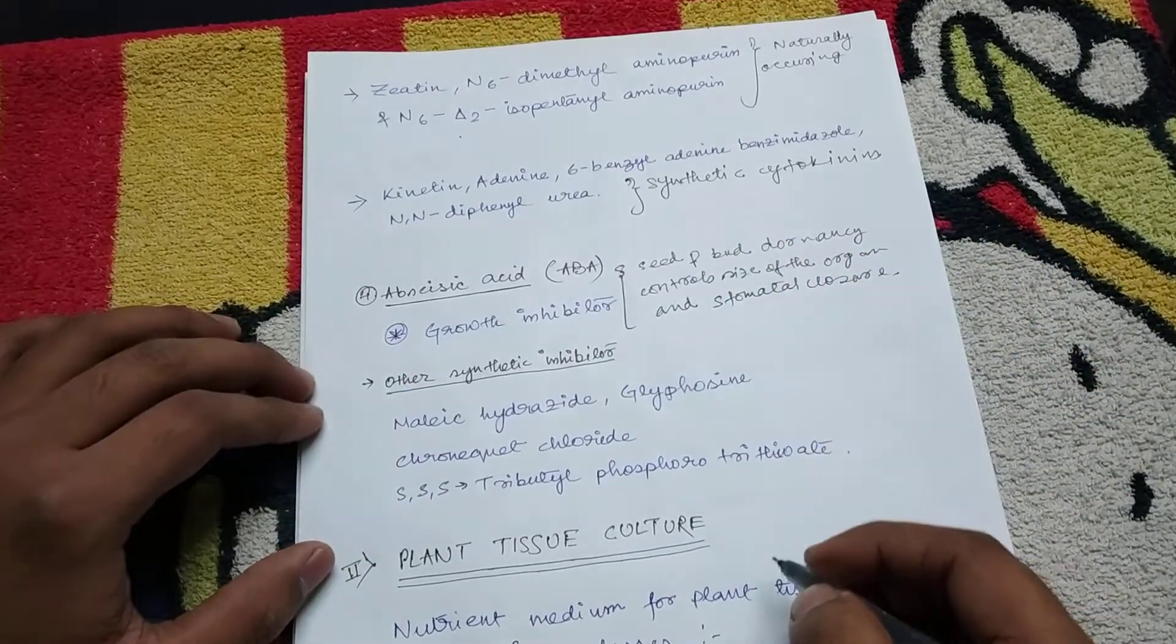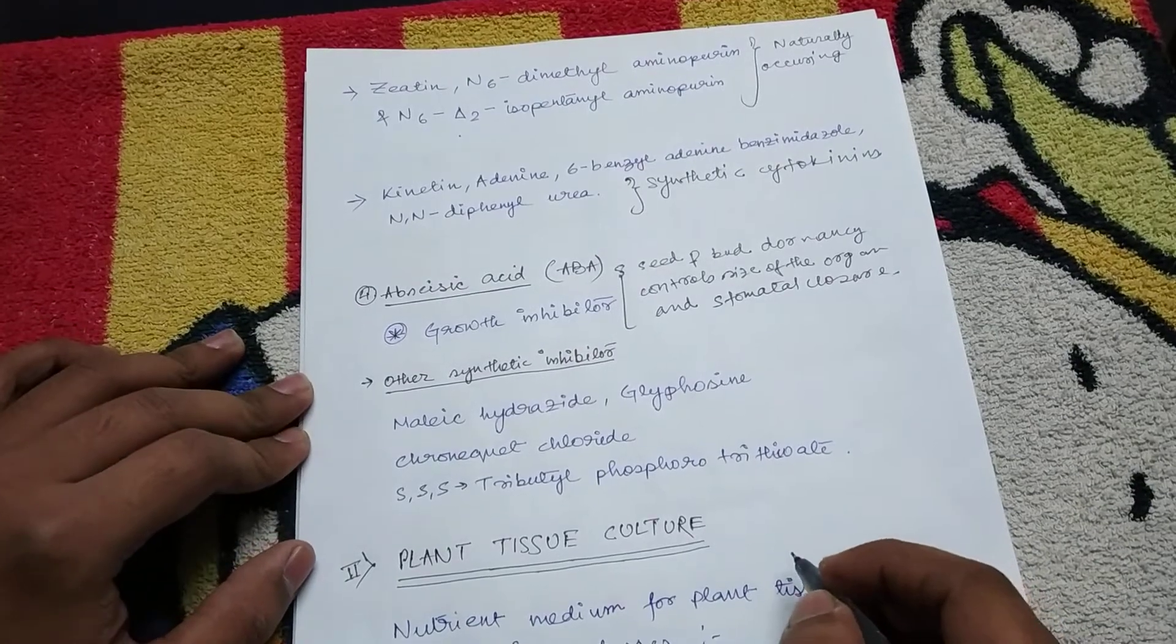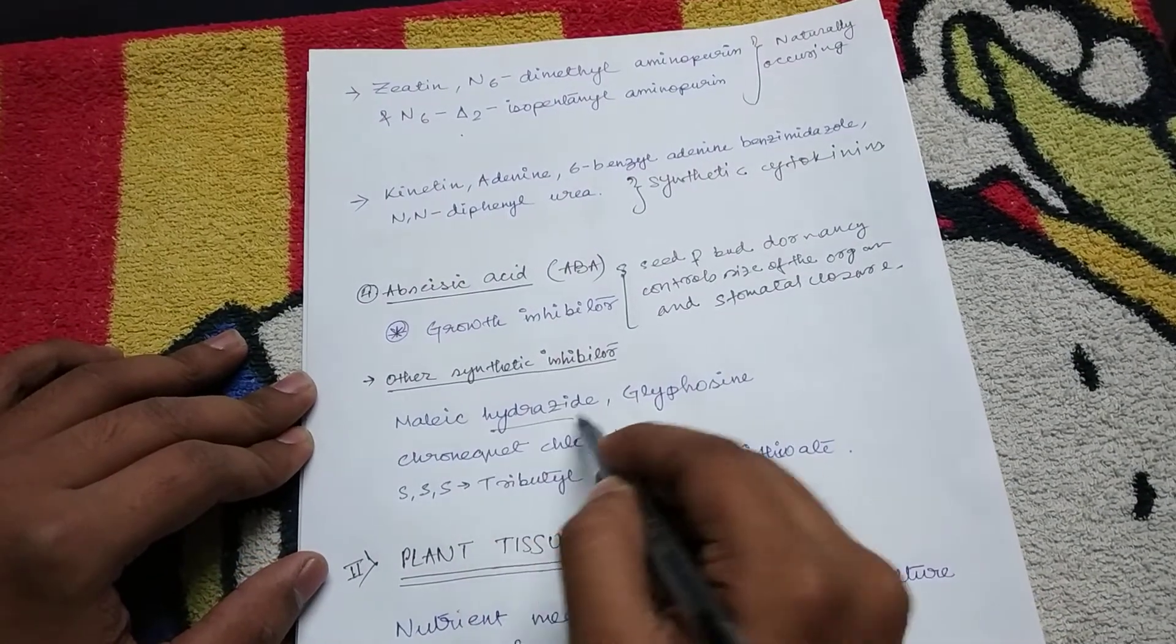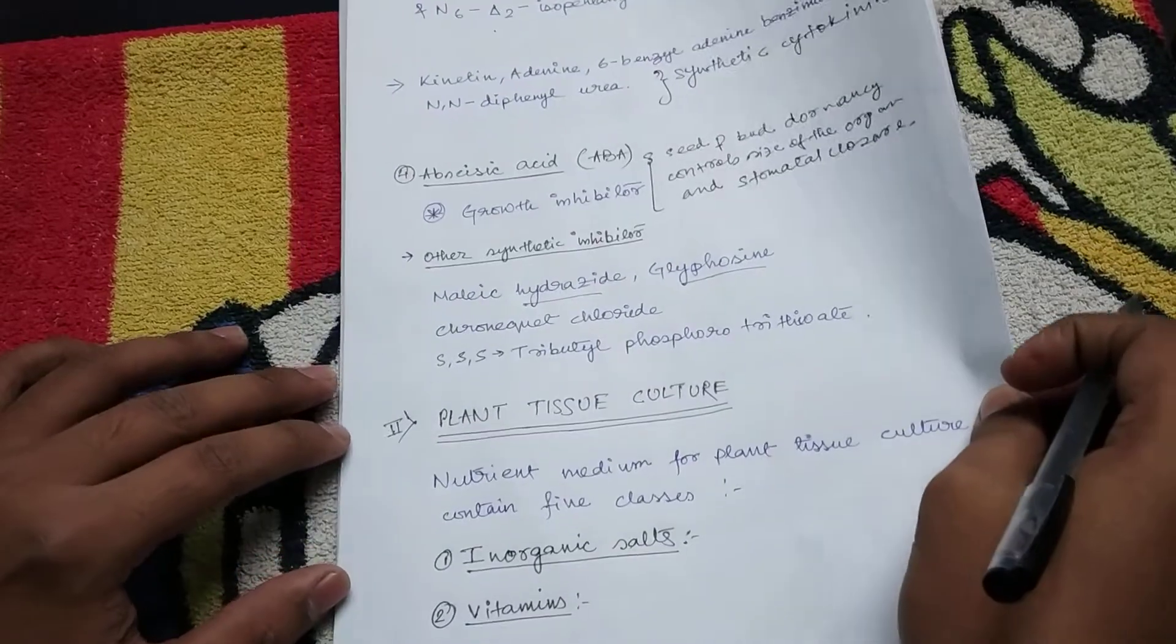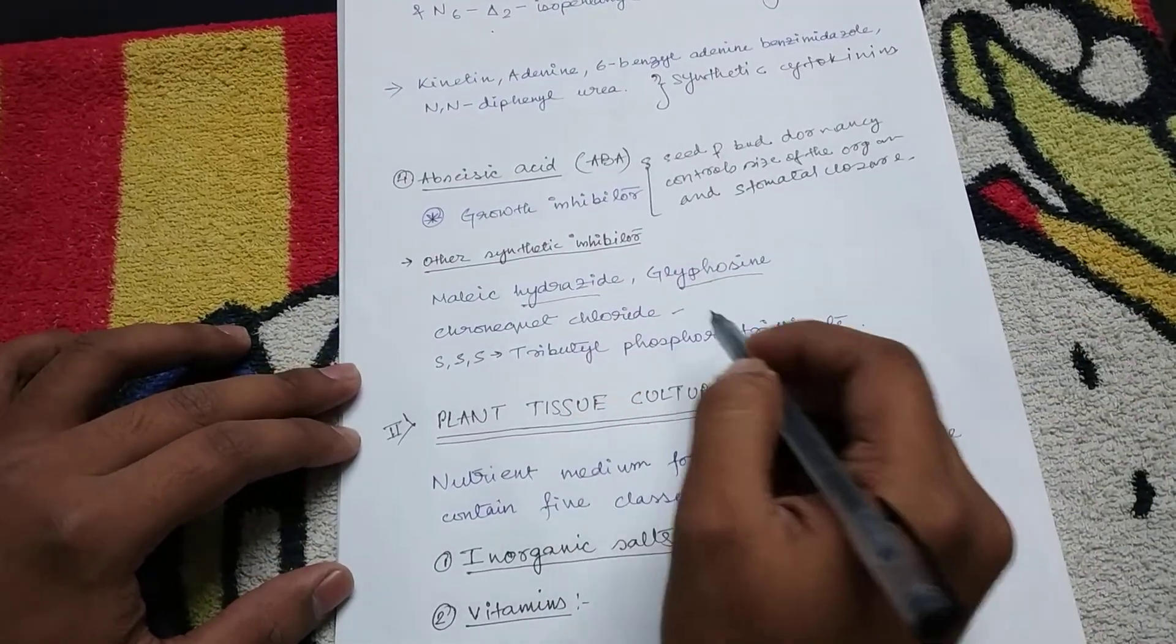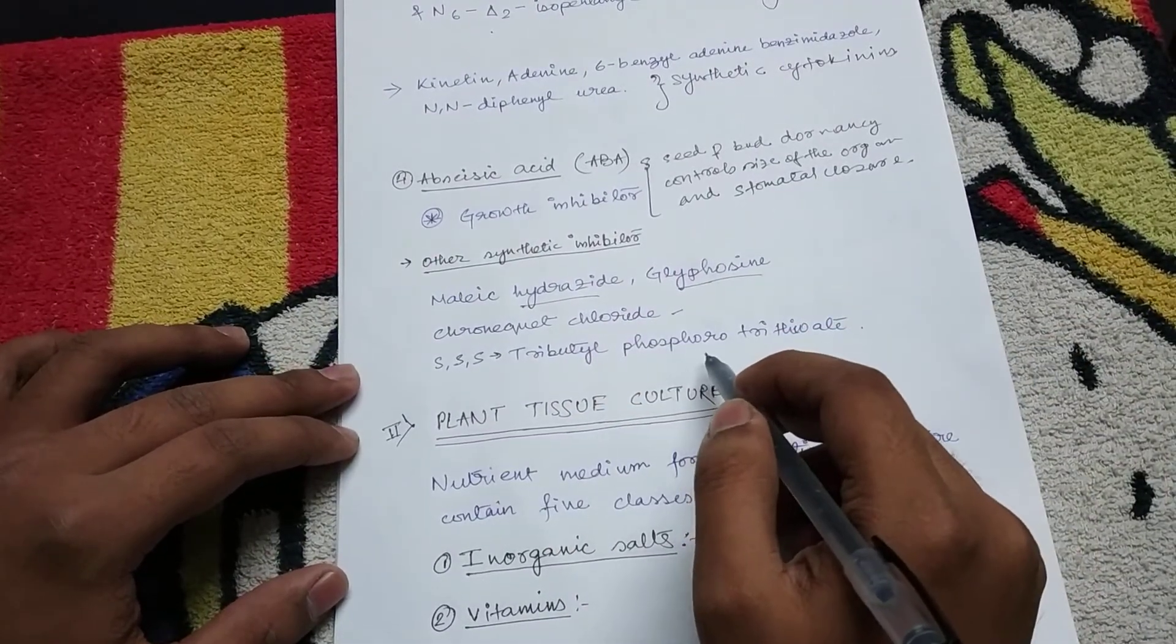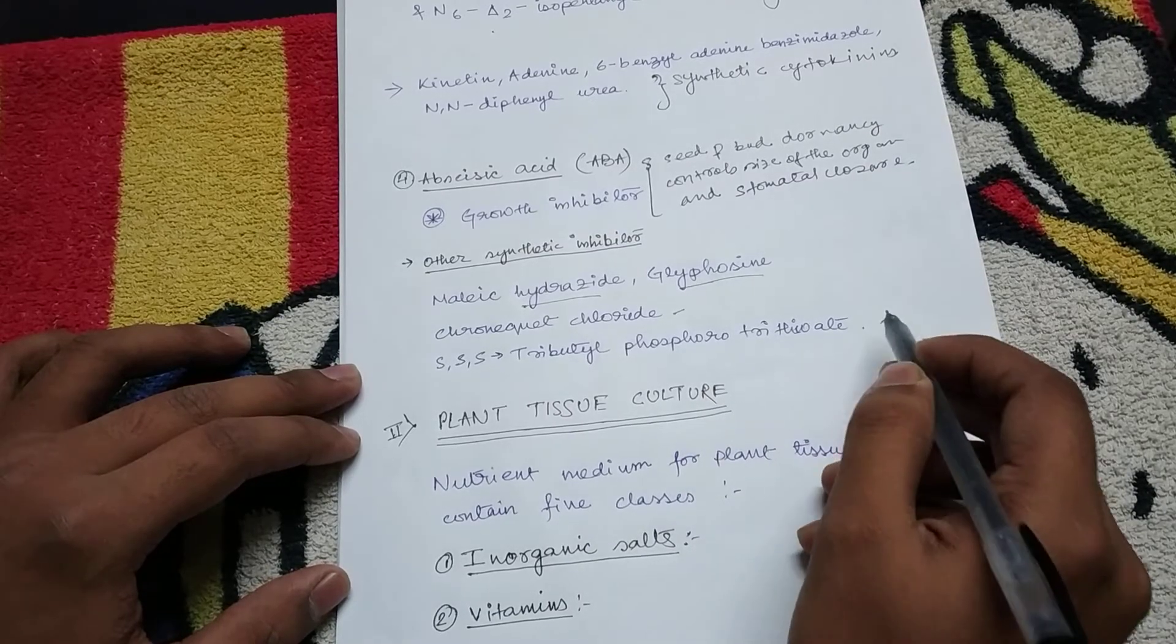Now some other synthetic inhibitors are maleic hydrazide, glyphosine, chlormequat chloride, and SSS-tributyl-phosphorotrithioate.